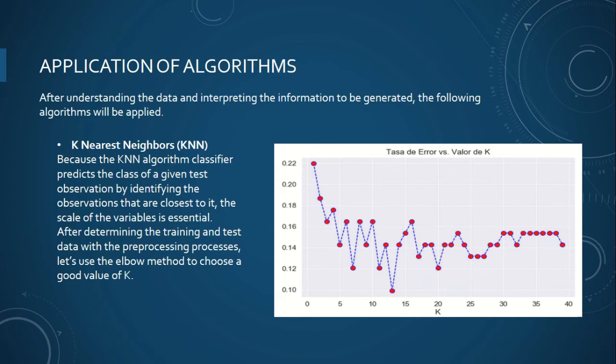For the application of algorithms, after understanding the data and interpreting the information to be generated, the following algorithms will be applied. The k-nearest neighbors algorithm classifier predicts the class of given test observations by identifying the observations that are closer to it. The scale of the variable is essential. Any variable that has a large scale will have a much more significant effect on the distance between the observations than variables that are on a small scale, and therefore on the k-NN classifier. After determining the training and the test with the preprocessing, we use the elbow method to choose the good value.